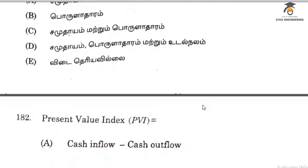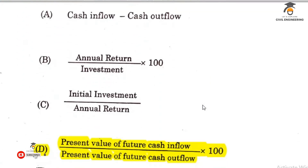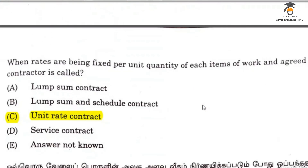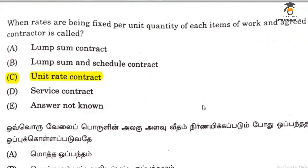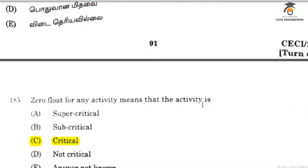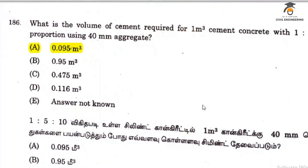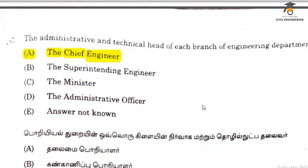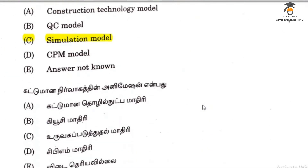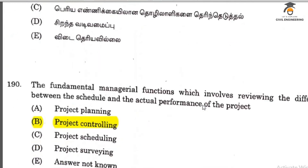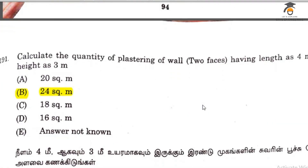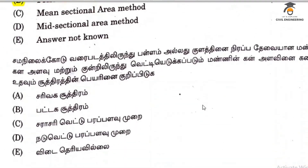Question 181 relates to social, economic, and health factors. The NPV formula relates to the present value of future cash inflow. Question 183 is the unit rate contract. Question 184 is 0 float. Question 184 critical path. Question 186 is 0.095 m³. Question 187 relates to the chief engineer. Question 188 is simulation model. Question 189 is proper time keeping. Question 190 is project controlling. Question 191 is 24 square meters. Question 192 is the prism model formula.